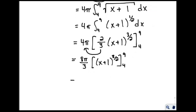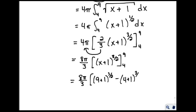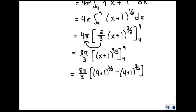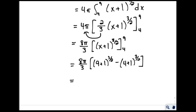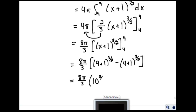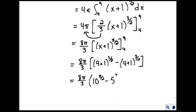This gives us 8 pi over 3, times 9 plus 1 to the 3 halves, minus 4 plus 1 to the 3 halves, which is 8 pi over 3 times 10 to the 3 halves minus 5 to the 3 halves. The decimal approximation for that is approximately 171.258.